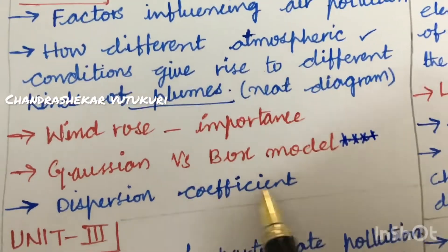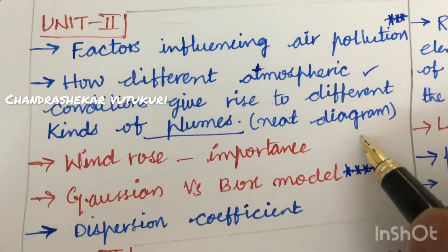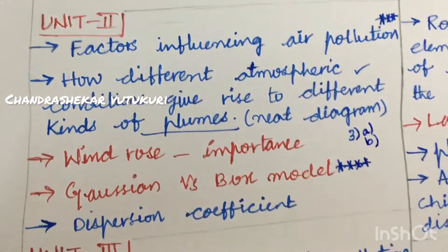And the windrows and its importance and the difference between Gaussian versus box model is said to be very important and gunshot question. And the dispersion coefficient may also be asked sometimes. This is all about 3A as well as 3B, dear students.